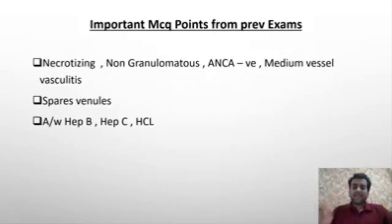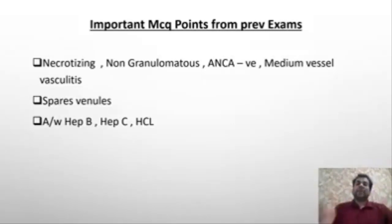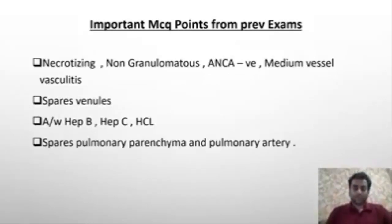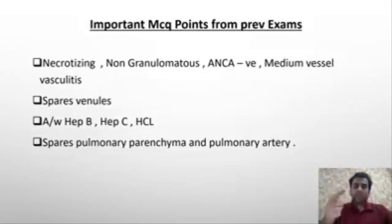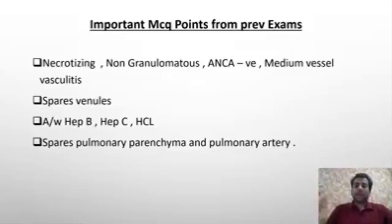As high as 30 to 35 percent of patients with polyarteritis nodosa are associated with hepatitis B, so whenever in an exam you see a hepatitis B-associated vasculitis, always think of polyarteritis nodosa. It spares the pulmonary artery and pulmonary parenchyma, so the lung is not a favorite organ — this is in sharp contrast to small vessel vasculitides like microscopic polyangiitis, eosinophilic granulomatosis with polyangiitis, and granulomatosis with polyangiitis, where lung involvement is very important.